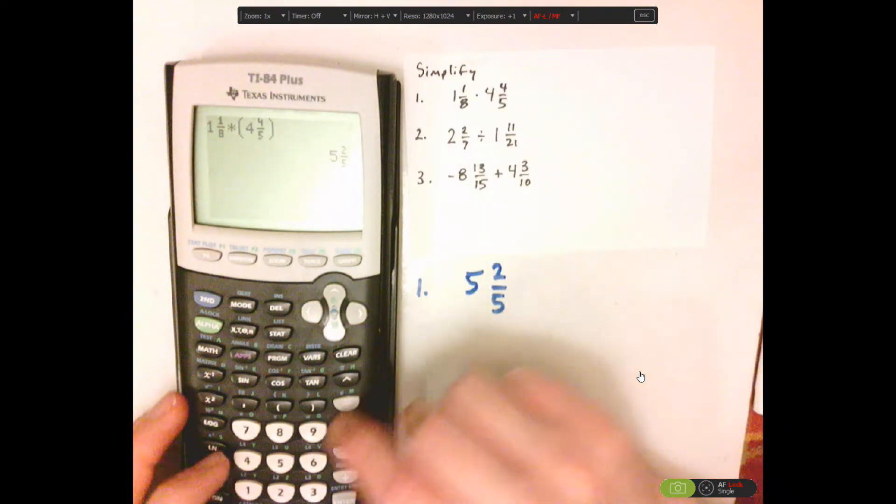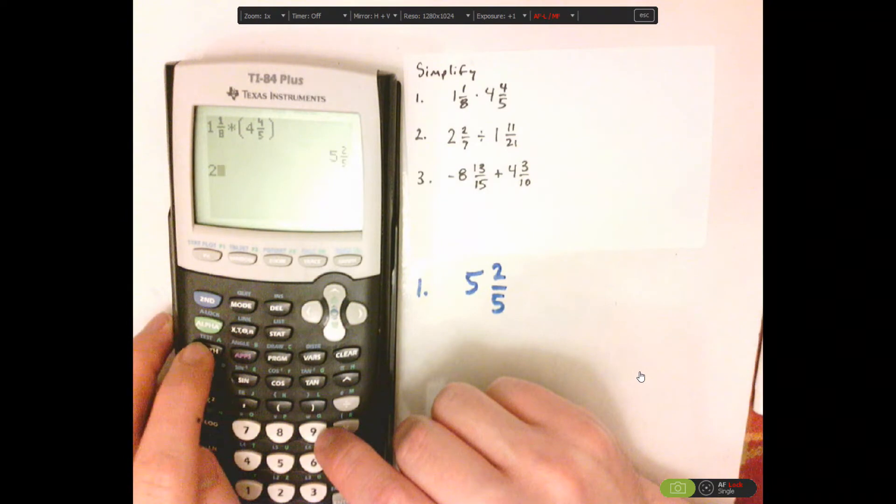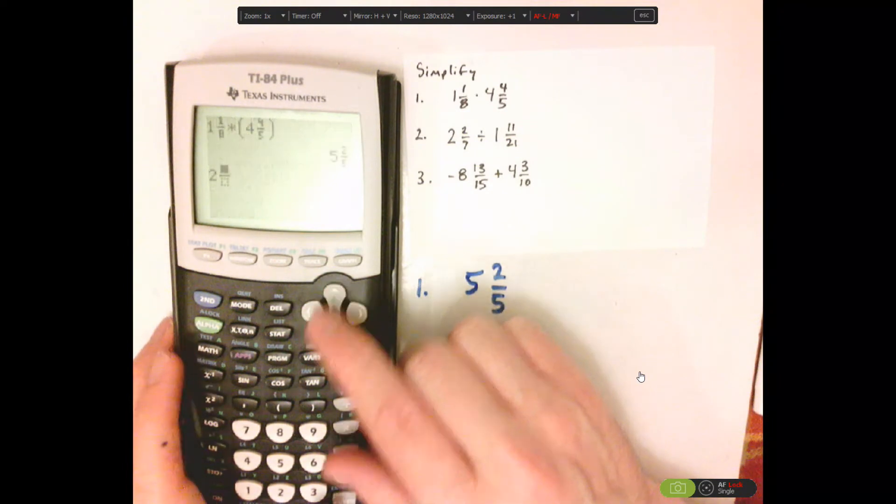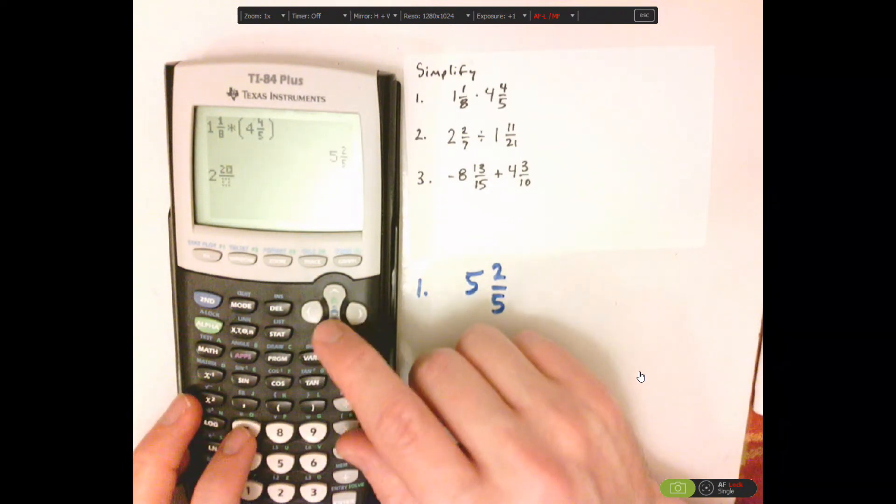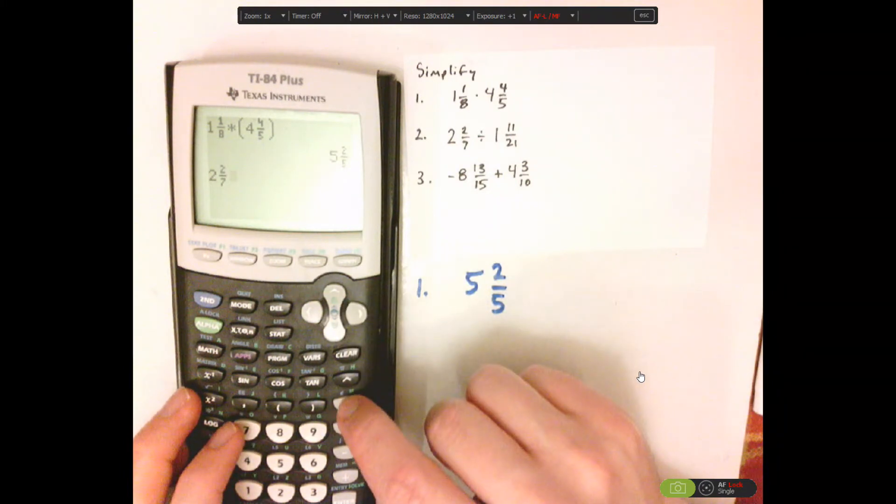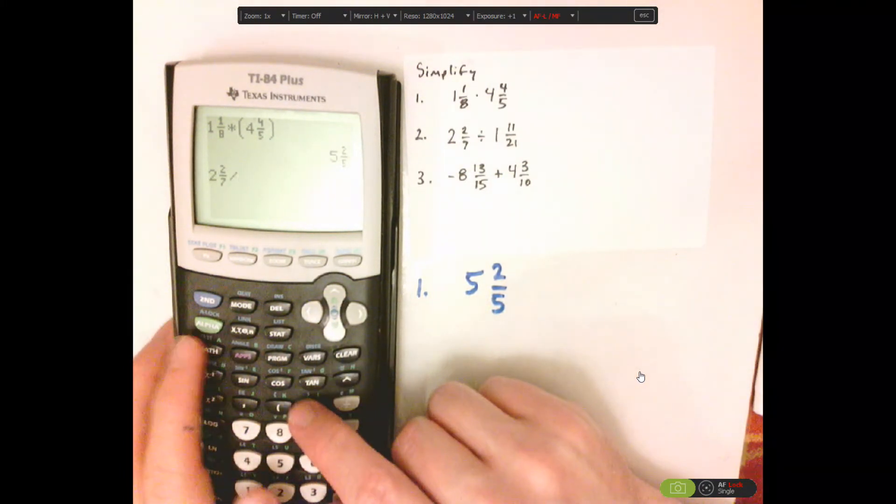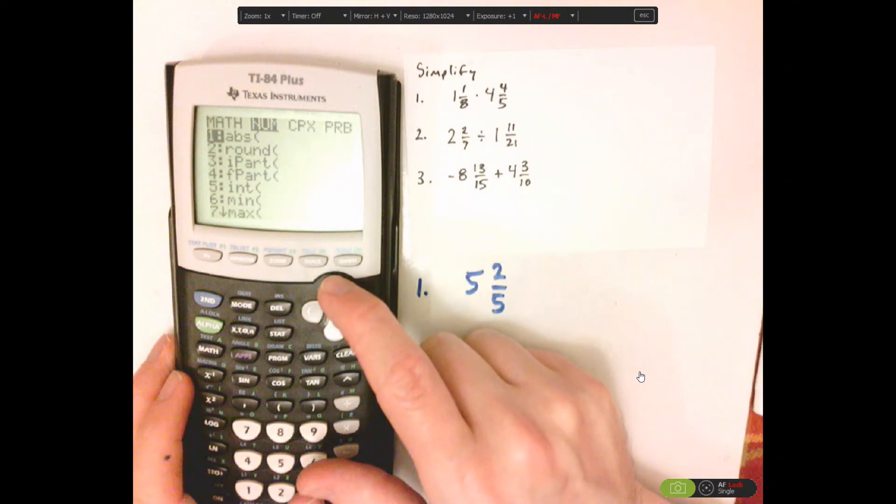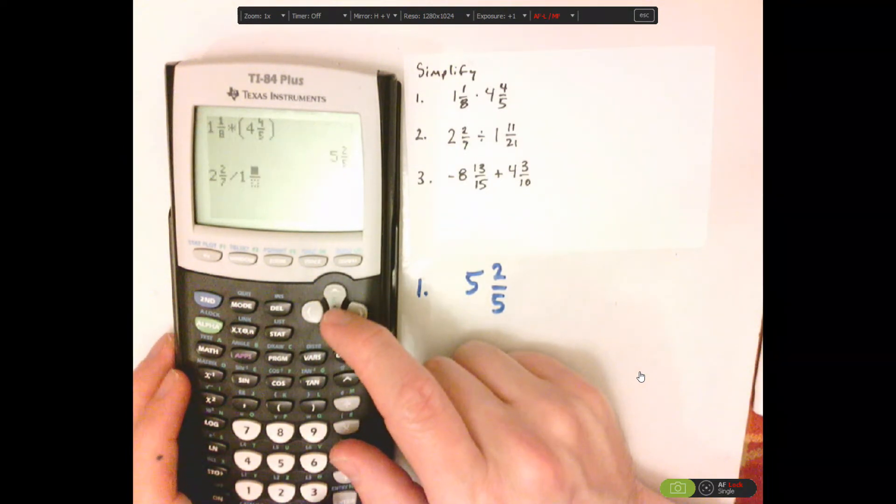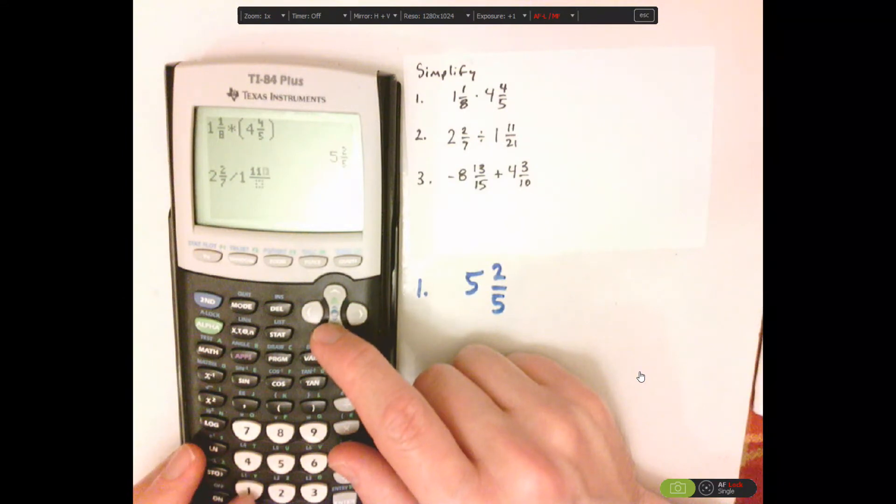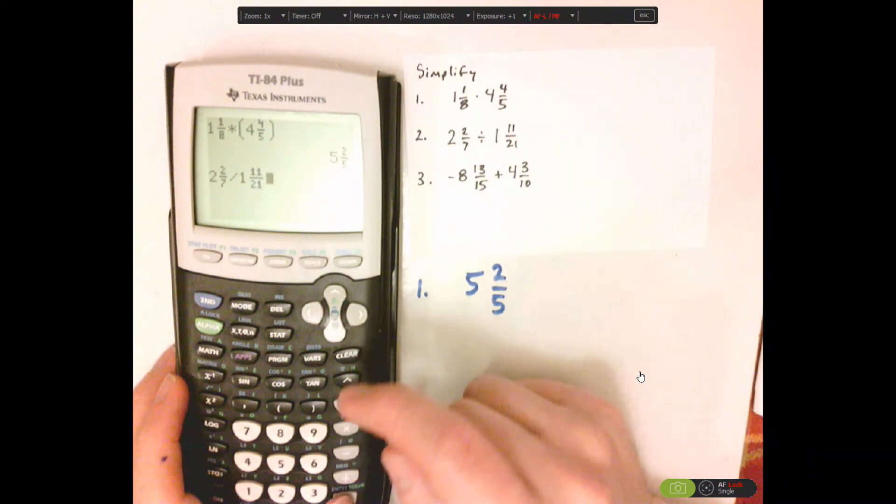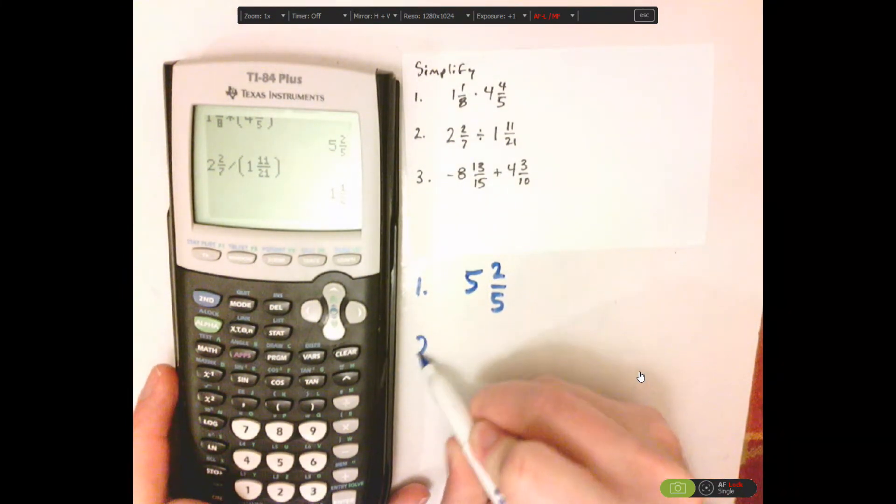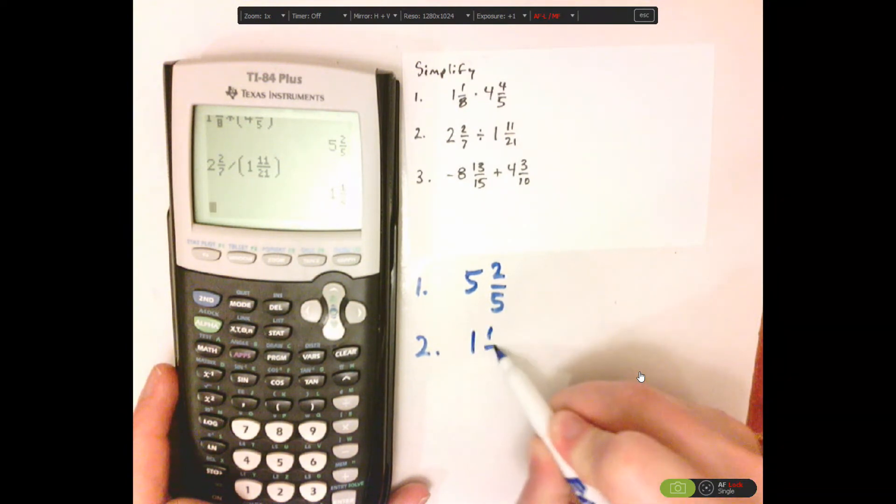Alright, we could do the same thing with division. 2 firsts, math, number, just like that. That's 2 sevenths divided by 1. See, I'm clicking over, and then up, and then selecting that. 11 twenty-firsts. See how it identified that and put it automatically in parentheses, that's nice. So 1 and 1 half.